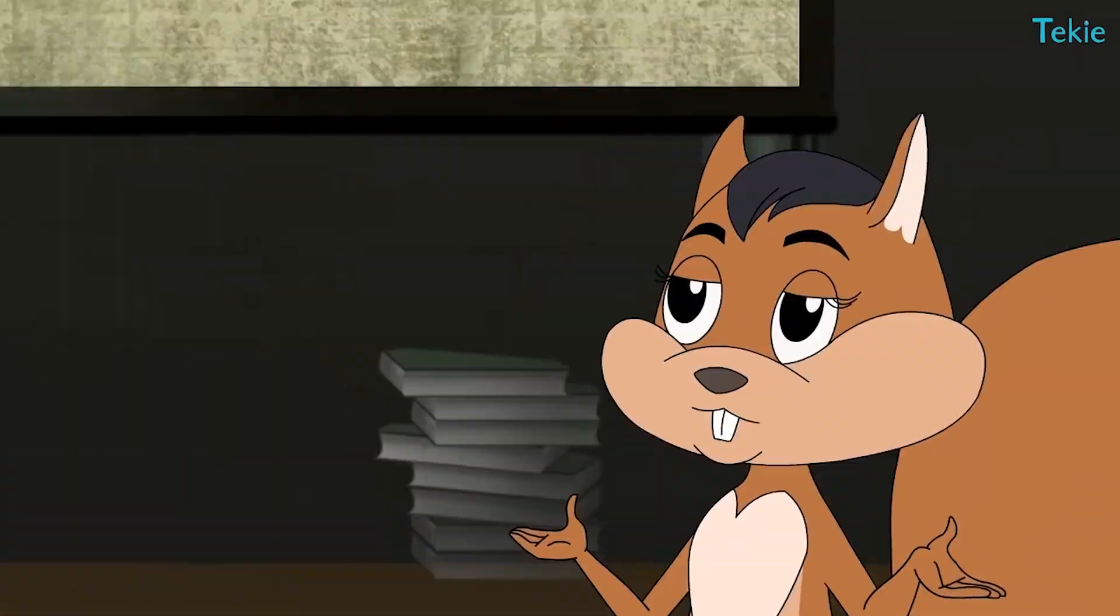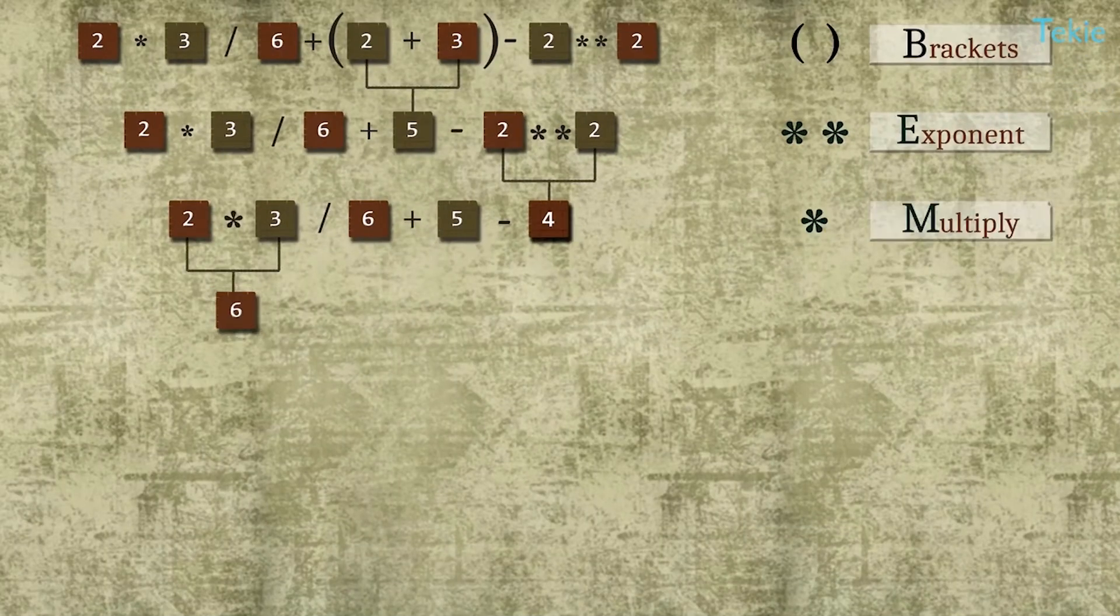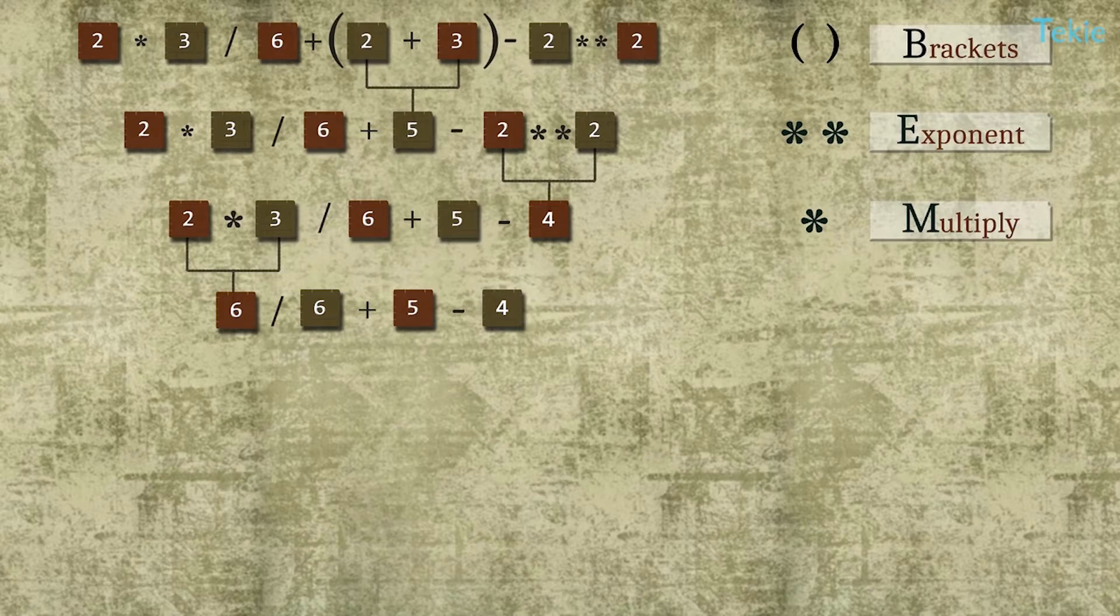Well, that depends on who comes first in the expression while moving from left to right. Like in this case, multiplication appears first, so Mr. Python will multiply first and then divide.